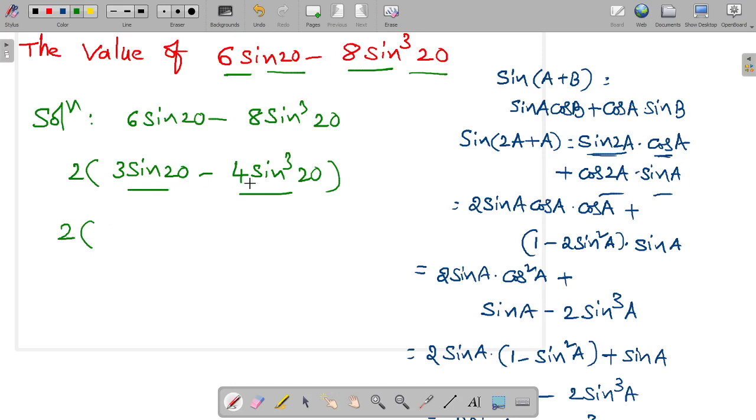3 sine A minus 4 sine cube A is nothing but sine 3A. Sine 3A is equal to 2 into sine 3 into 20. Is equal to 2 into sine 60. Sine 60 value is root 3 by 2. 2 to cancel out. Answer is root 3.